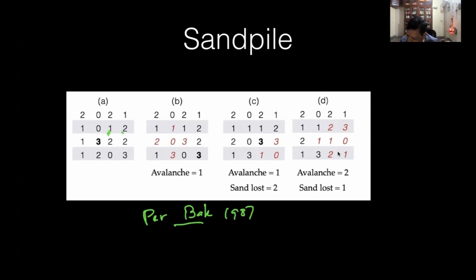But if you drop here, the number of sands becomes four. Now four is supposed to be critical. This site says I am overloaded, I cannot take it anymore.